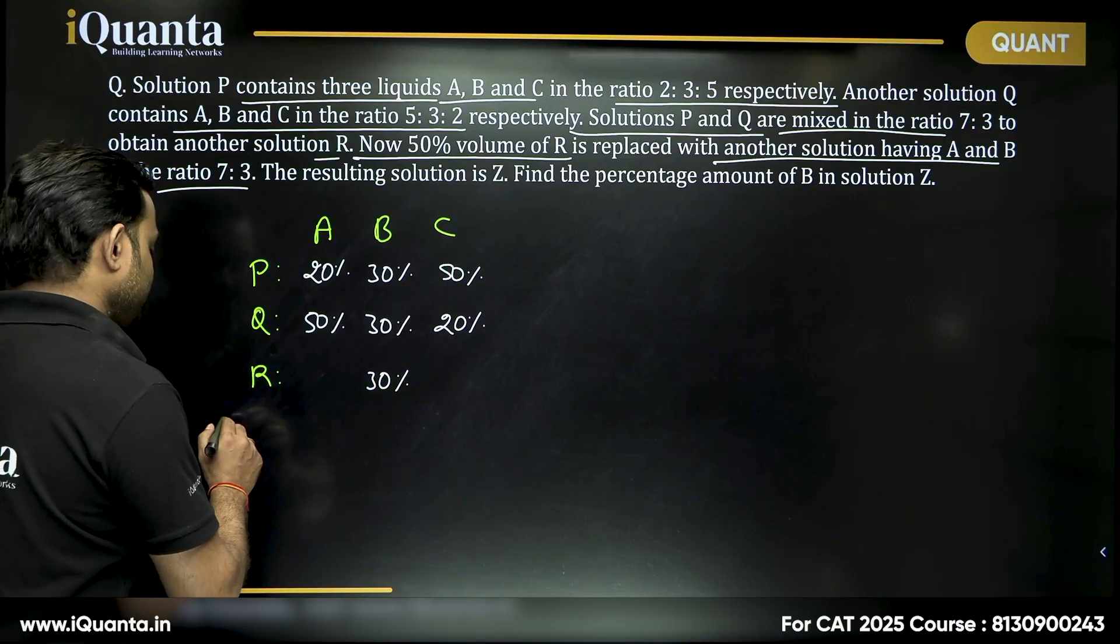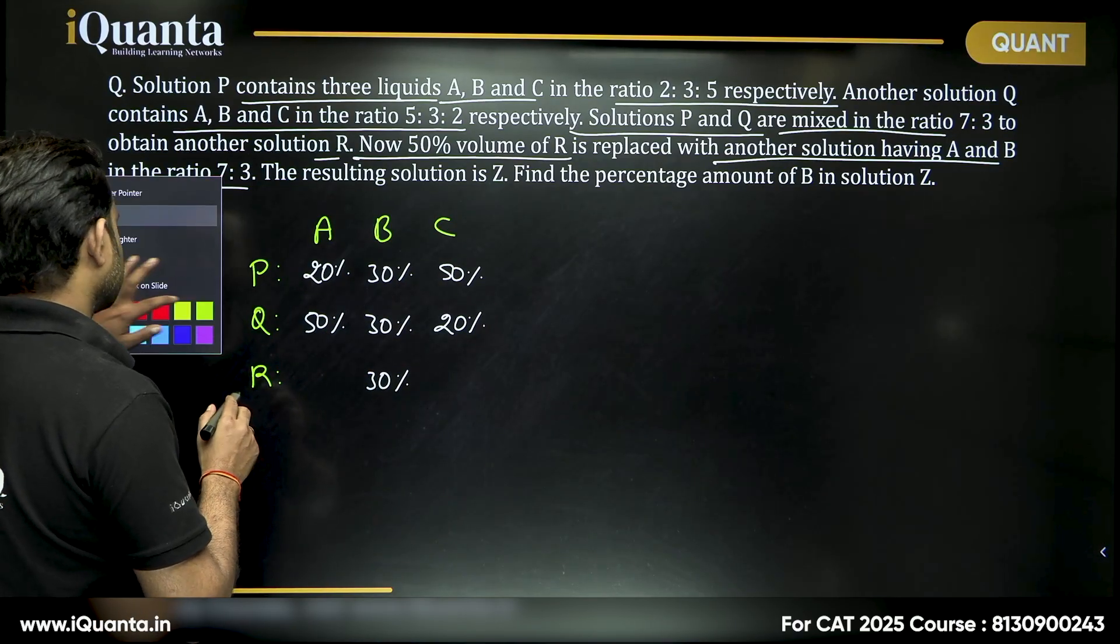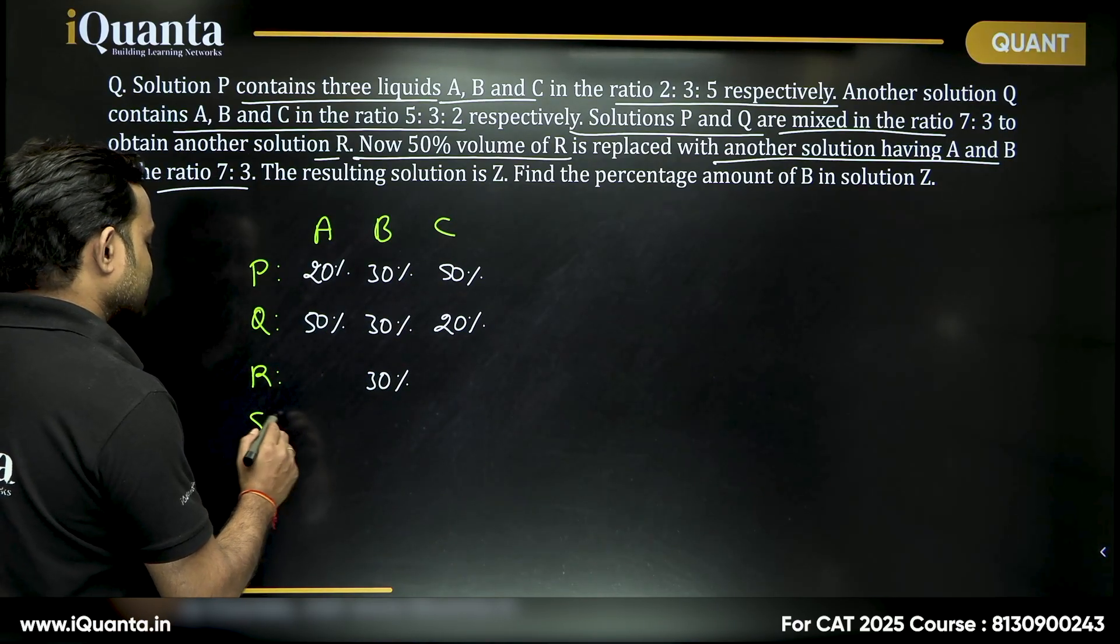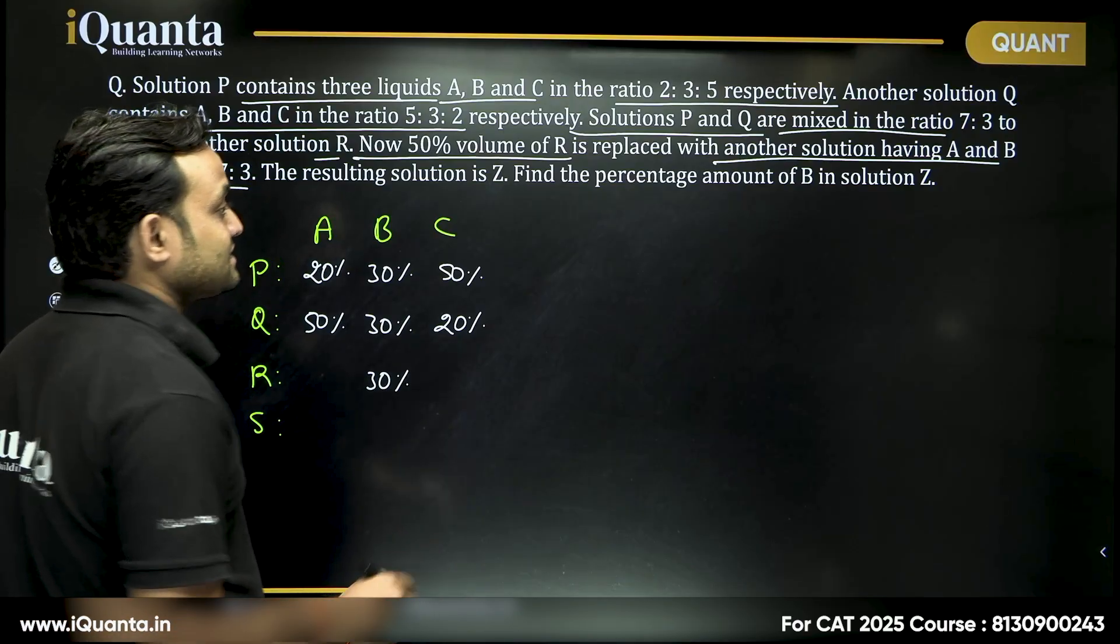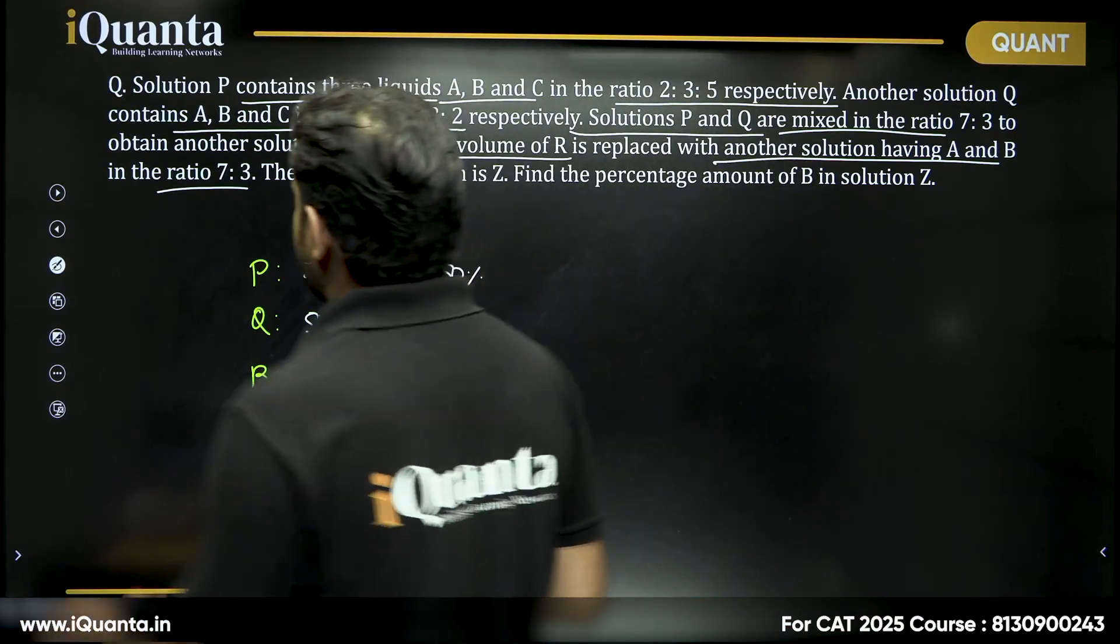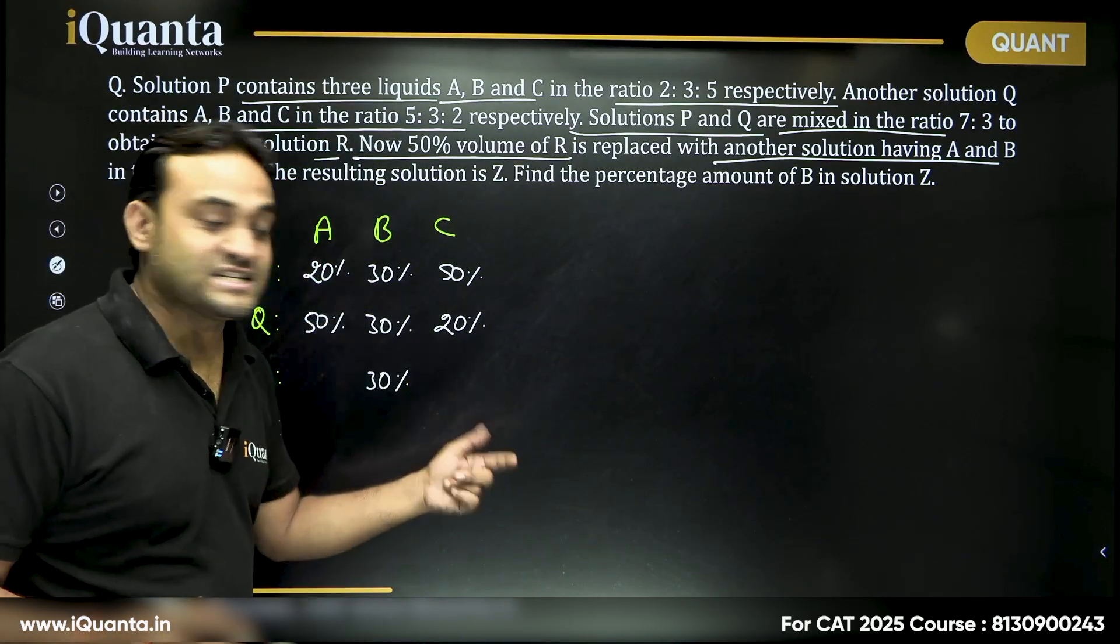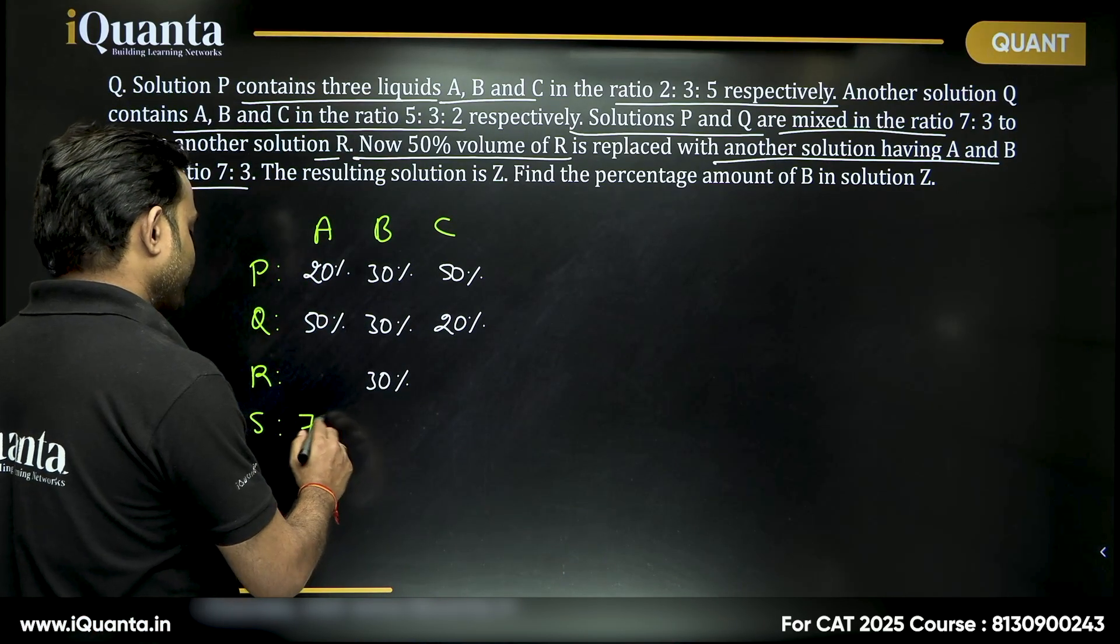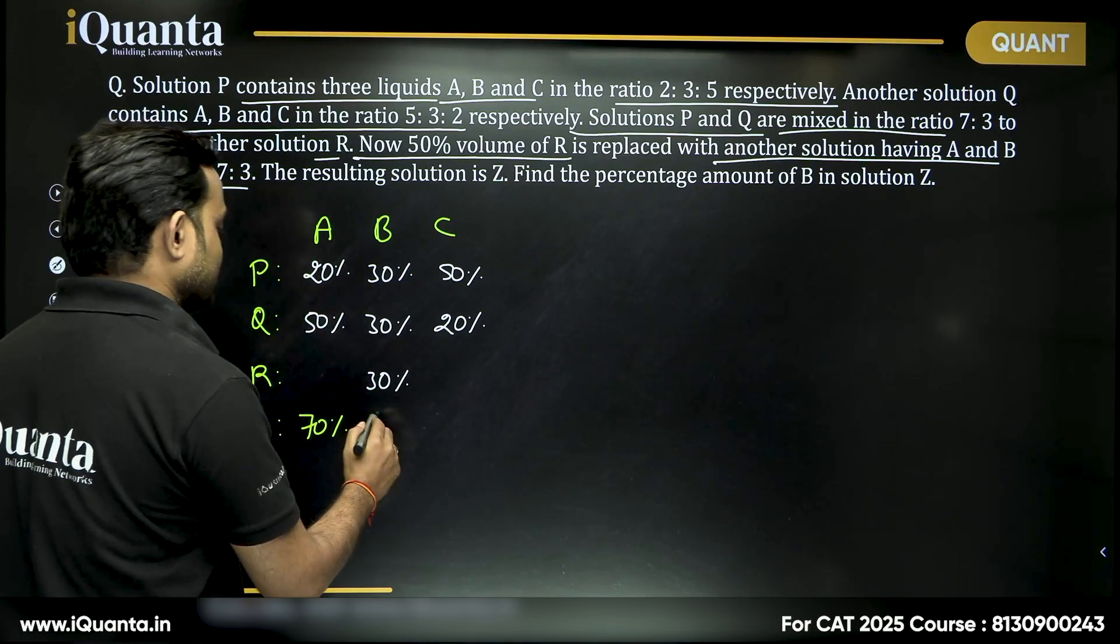Now the another solution, so let us say this solution is solution S. Now in solution S, it says A and B in the ratio 7 is to 3, means again A is 7 by 10, which is 70 percent here and B is 3 by 10, which is 30 percent.